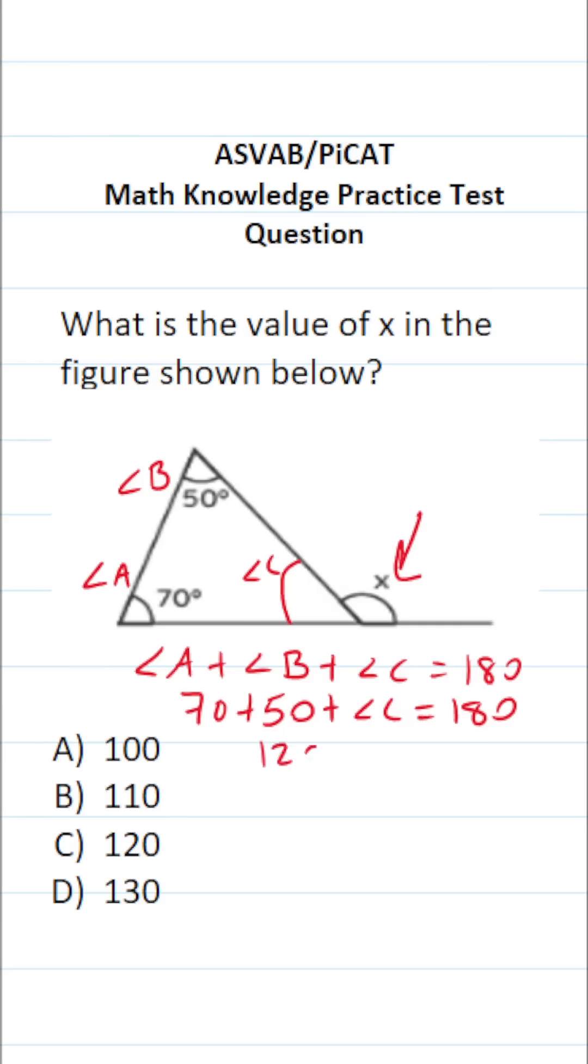70 plus 50 is 120. So this becomes 120 plus the measure of angle C equals 180 degrees. To get the measure of angle C by itself, we're going to subtract 120 from both sides of this equation.